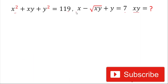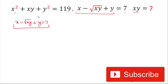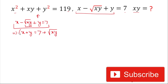For solving this problem we'll start with the second equation: x − √(xy) + y = 7. We will rearrange this expression to match the form of the first equation. We move x and y to one side and the square root value to the right hand side, so the equation becomes x + y = 7 + √(xy). Now we square both the left hand side and the right hand side.